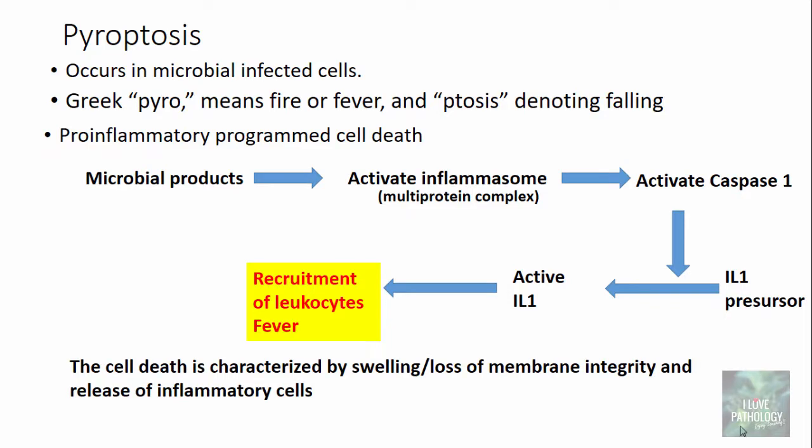Unlike apoptosis, cell death in pyroptosis is characterized by swelling and loss of membrane integrity. Once there is loss of membrane integrity, there is always a release of inflammatory cells, giving it characteristics similar to necrosis. The release of interleukin-1 resulting in fever is the reason why the term pyroptosis is used.